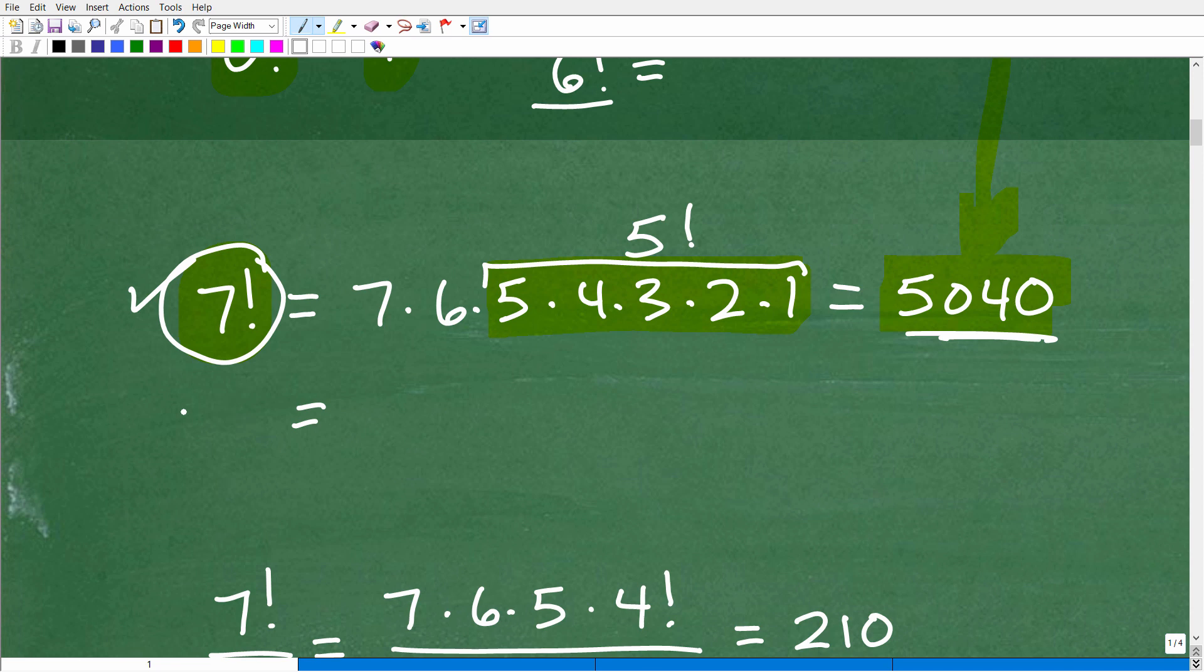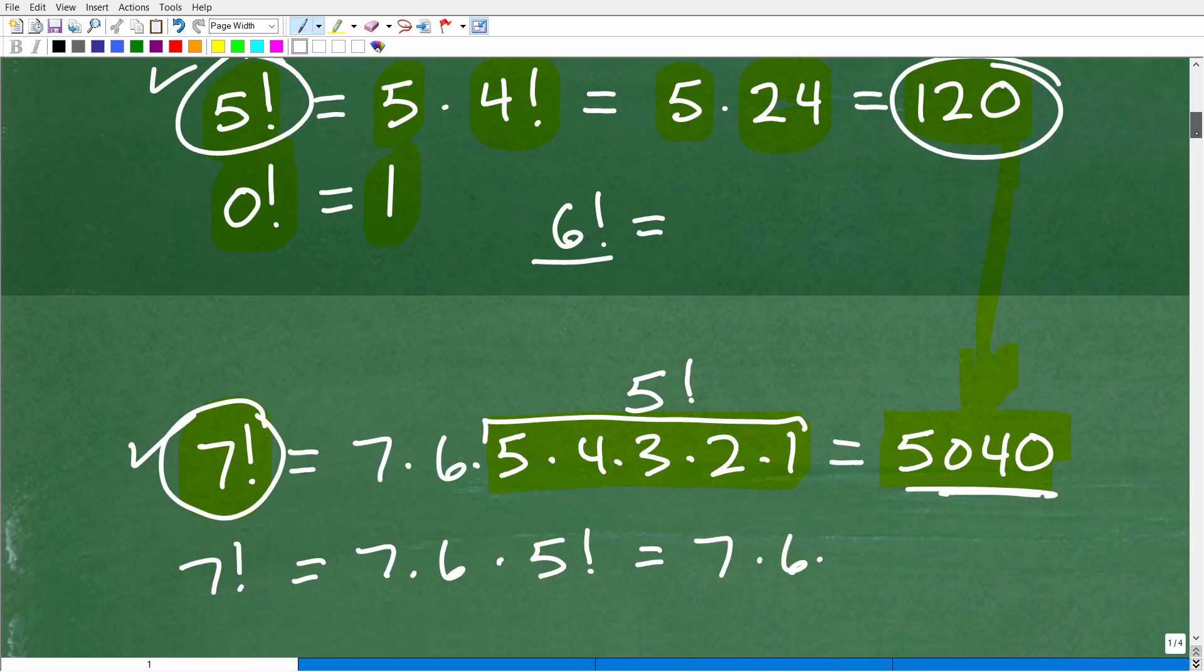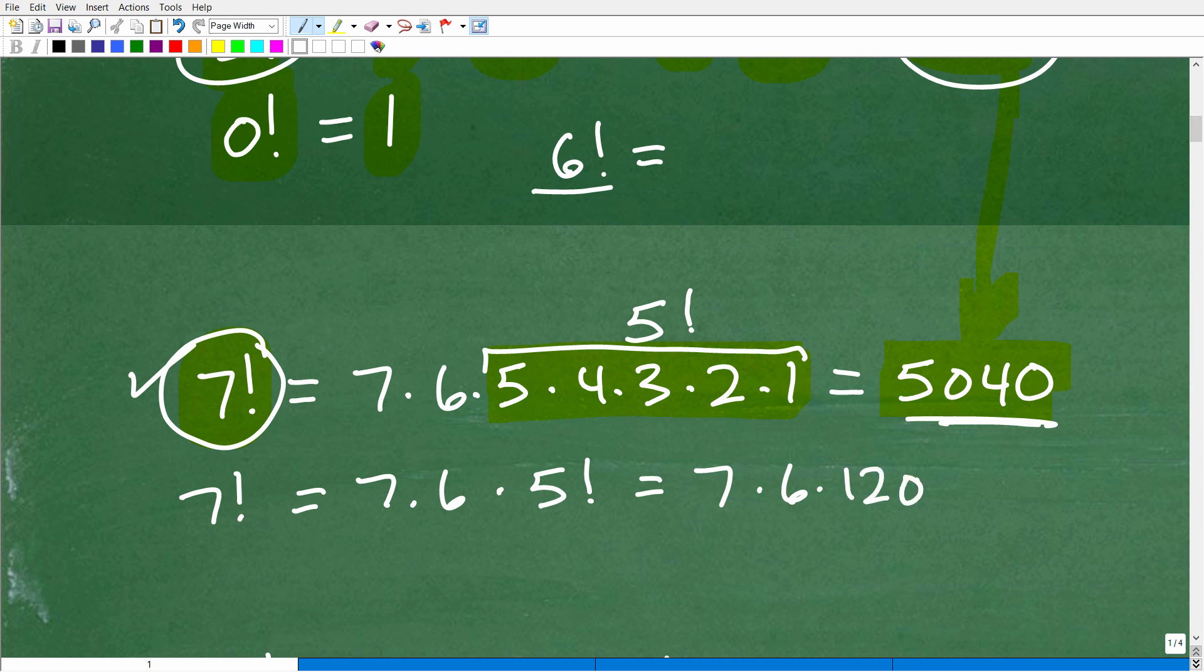So just to kind of satisfy that 7 factorial is the same thing as 7 times 6 times 5 factorial, you could see that in action. Just get your calculator out and double-check this math, but you'll see how it works. So that would be 7 times 6 times 5 factorial, which, again, is 120. So if you did this, you would get the same answer.